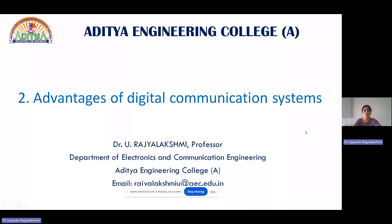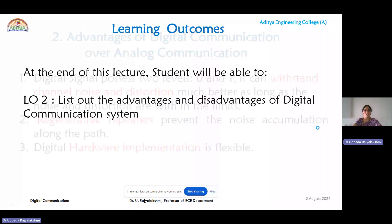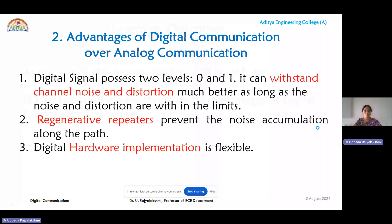We will discuss the advantages as well as the disadvantages of the digital communication system. The digital signal has only two levels, 0 and 1. Taking a bipolar signal as an example, it has a magnitude of plus 1 and minus 1.